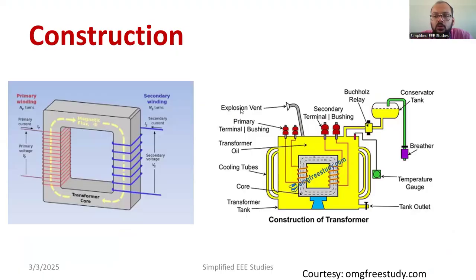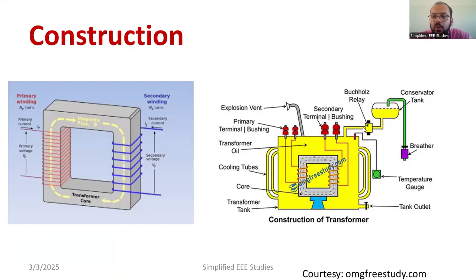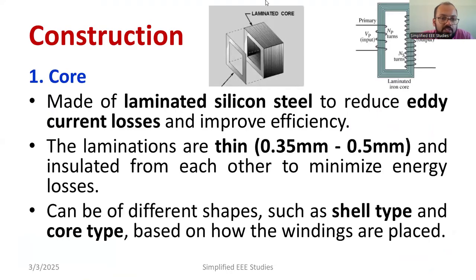The construction is very simple. The major components of a transformer, which I have already shown in the diagram, include the transformer core and transformer winding. Apart from that, we have different types of components like relay, Buchholz relay, transformer oil or transformer oil tank, temperature gauge, and the outer tank. These are the supplementary components — I will give you the details.